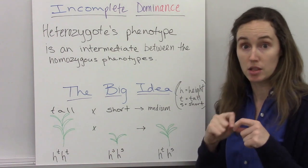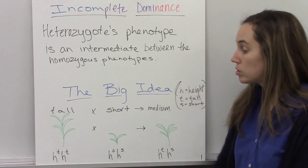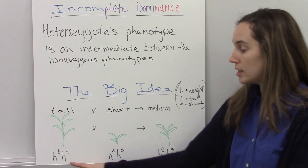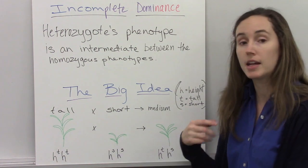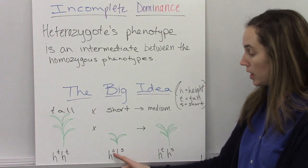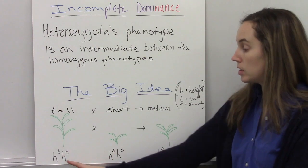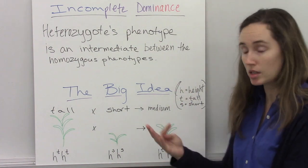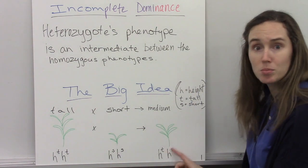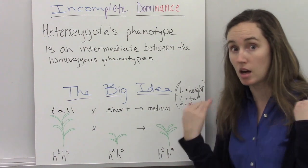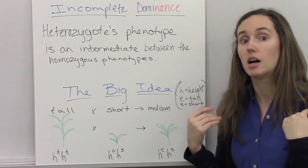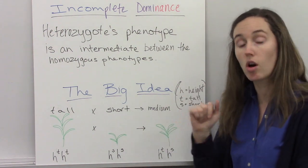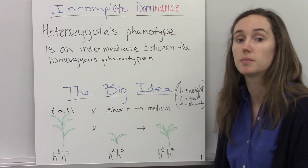And then we designate the different alleles for height using superscripts. So I use T for tall, so here my homozygous tall plant, and then I use the superscript S for short. So we have a plant that's homozygous for tall, one that's homozygous for short, and the heterozygote - it's not like it has M's for medium because M is not an allele. Medium is the phenotype that's a result of having one tall allele and one short allele.